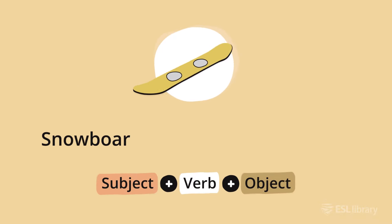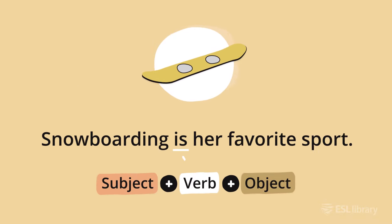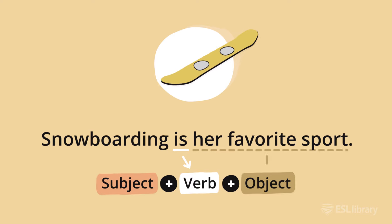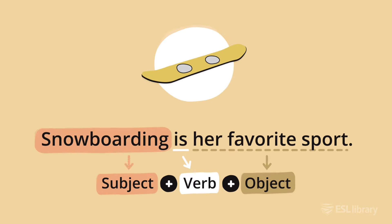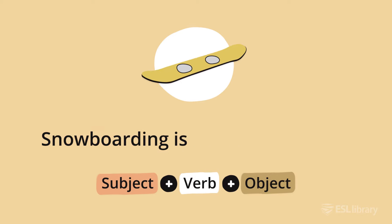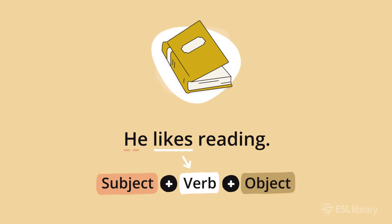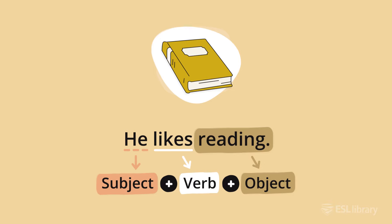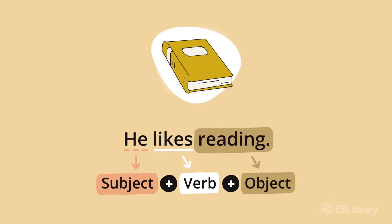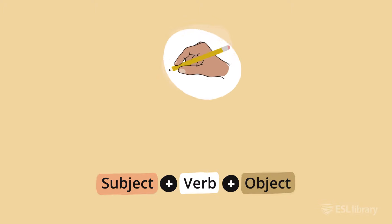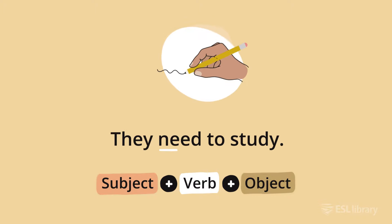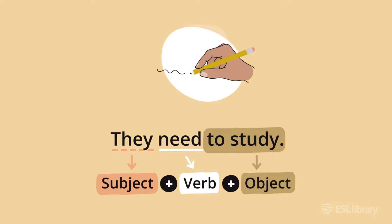In the sentence 'snowboarding is her favorite sport,' the gerund snowboarding is the subject. In the sentence 'he likes reading,' the gerund reading is the object. In the sentence 'they need to study,' the infinitive to study is the object.